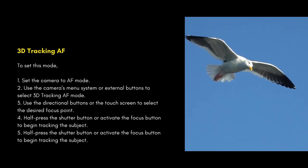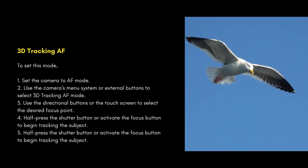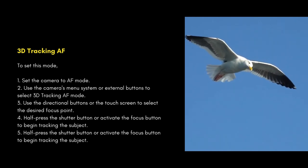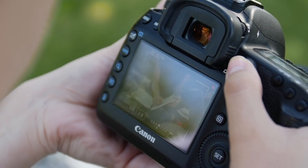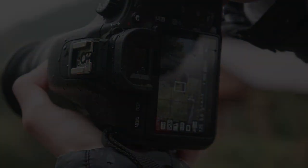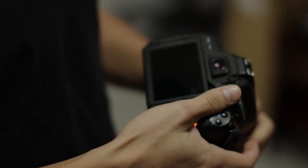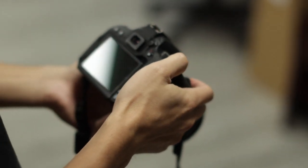Use the directional buttons or the touch screen to select the desired focus point, then half-press the shutter button or activate the focus button to begin tracking the subject. In conclusion, autofocus is a convenient and effective tool for photographers who want to quickly and accurately focus on the subject. With the ability to track moving subjects and lock onto still subjects, autofocus allows photographers to capture stunning images with ease. Setting the different autofocus modes on a camera is a simple and straightforward process that allows you to take full advantage of the AF system.